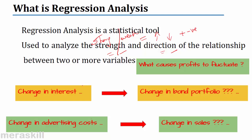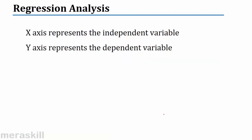The variables here were interest rates and the bond portfolio, or advertising costs and sales. The x-axis represents the independent variable and the y-axis represents the dependent variable. I hope all of you have an idea about graphs. Normally in a graph, you have a horizontal axis called the x-axis and a vertical axis called the y-axis.